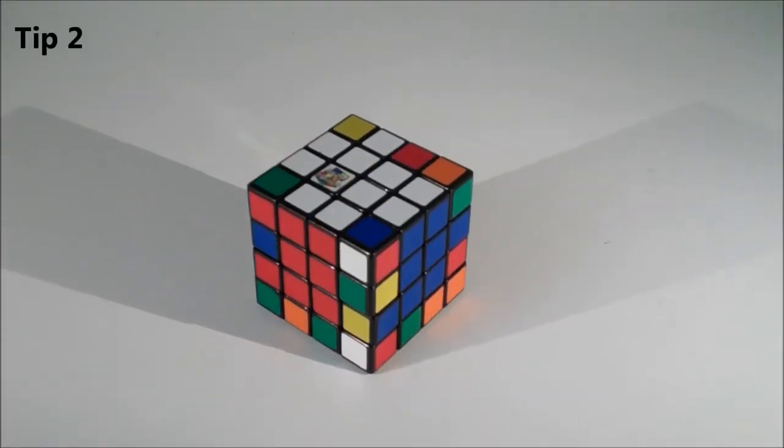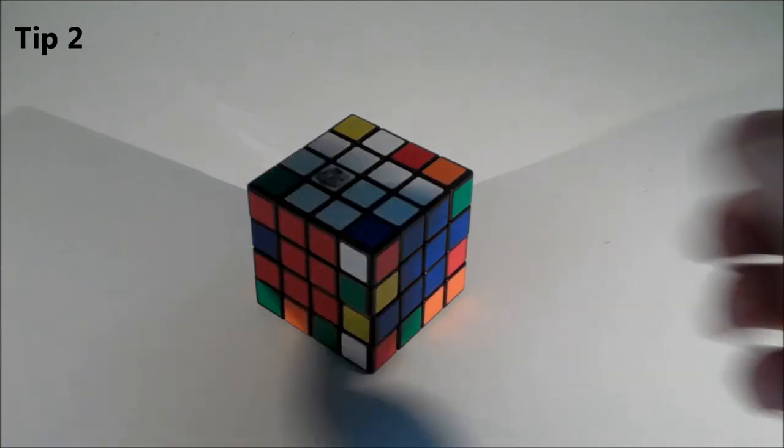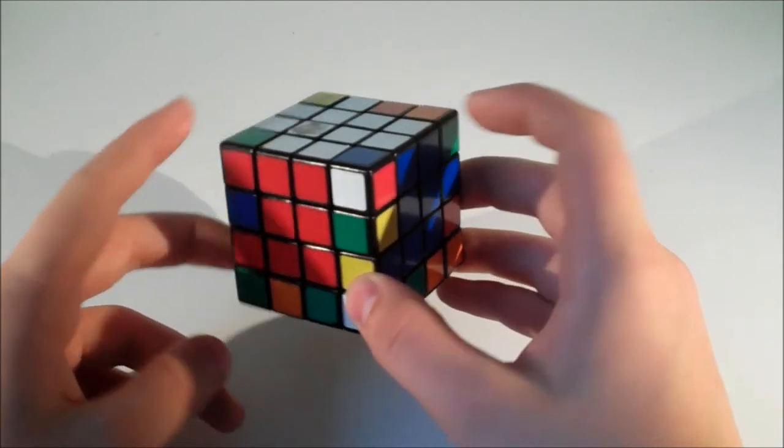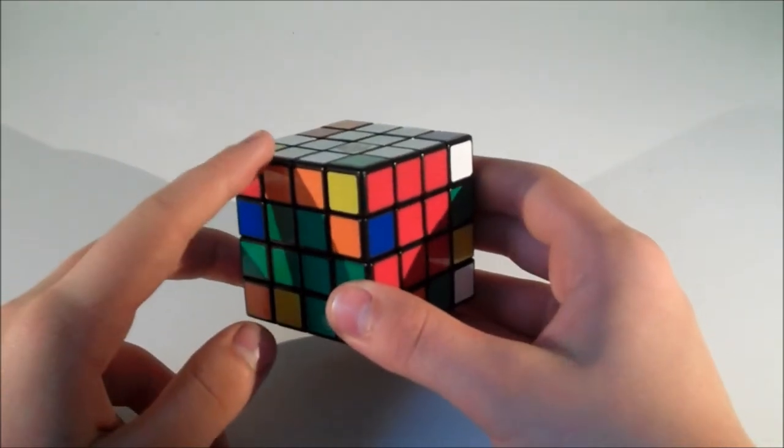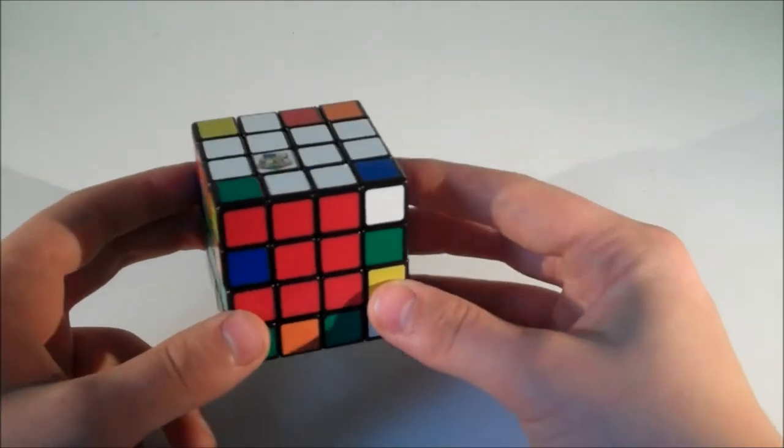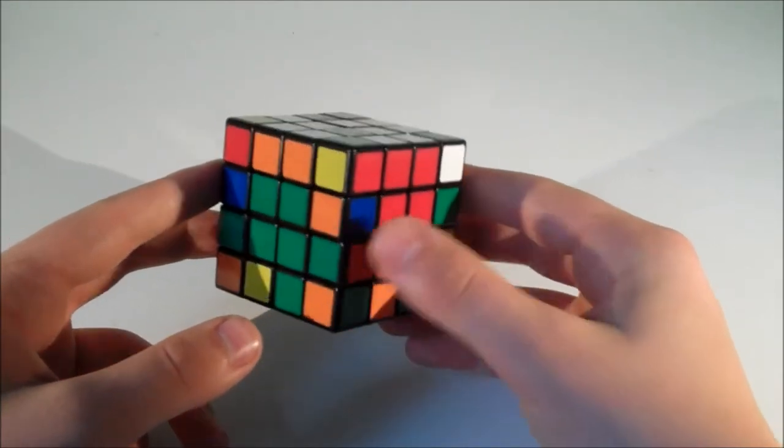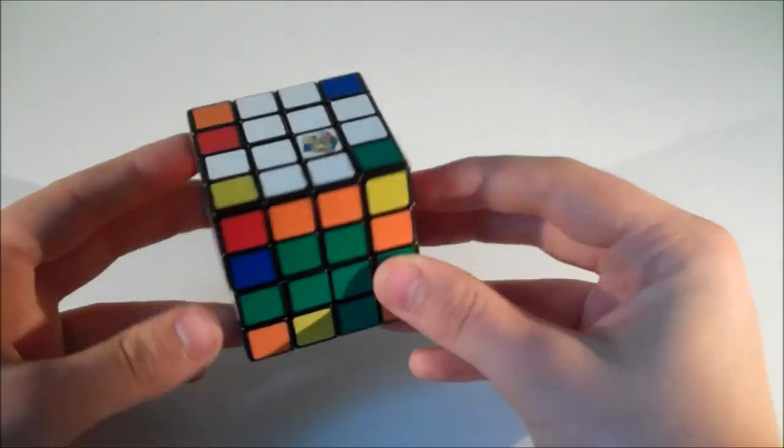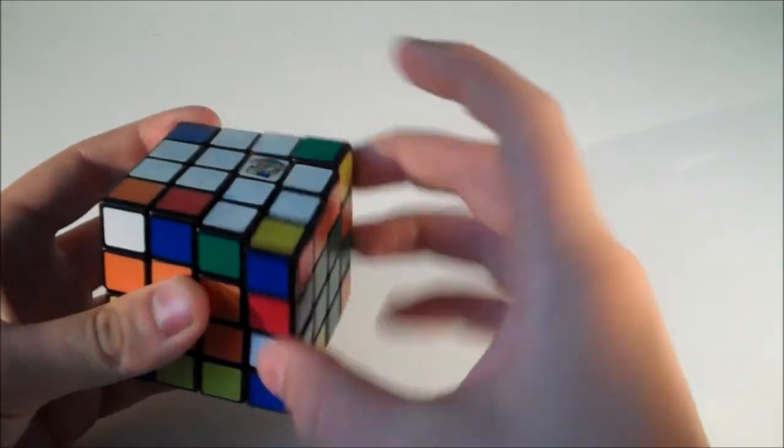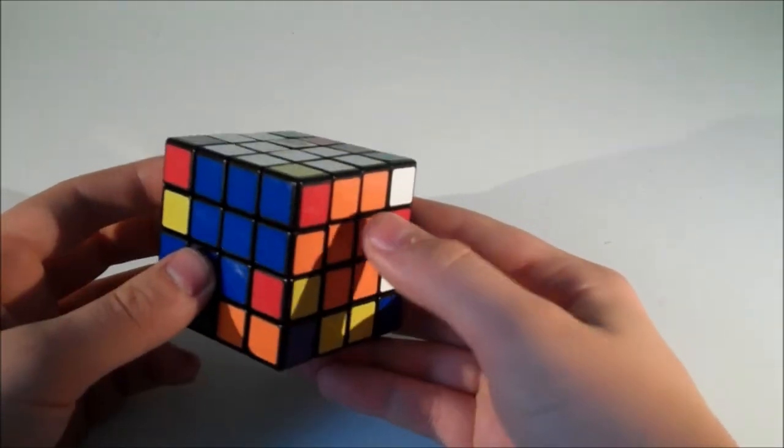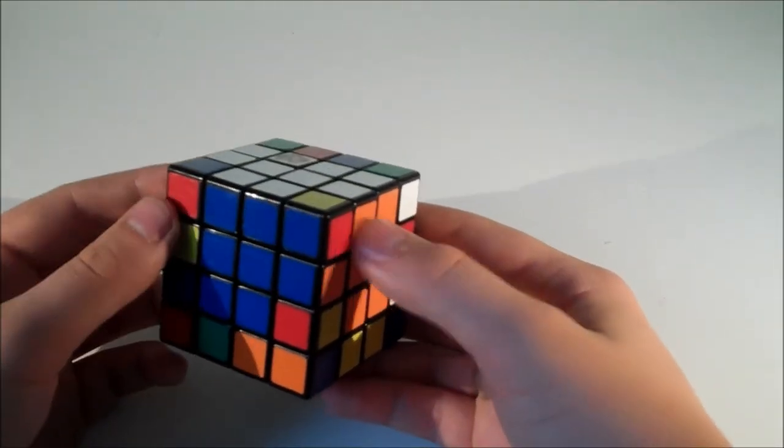So the next tip for you guys is when we are making the last white edge. Now normally when we make the first three edges, we put two of them in the right place and the third one in the wrong place so we can put in the fourth one without a problem. But we can put all three of the first white edges in the right place and I'll show you why. So I'm going to put this orange one into the correct place, so now we don't have to remember which edge is in the wrong place.